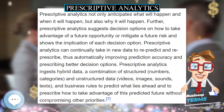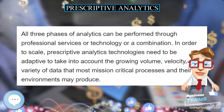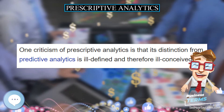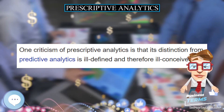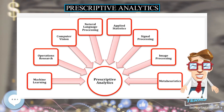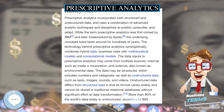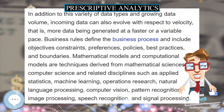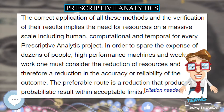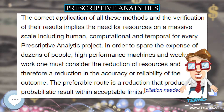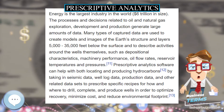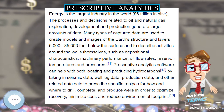Applications in Oil and Gas: Energy is the largest industry in the world at $6 trillion in size. The processes and decisions related to oil and natural gas exploration, development, and production generate large amounts of data. Many types of captured data are used to create models and images of the earth's structure and layers 5,000 to 35,000 feet below the surface and to describe activities around the wells themselves, such as depositional characteristics, machinery performance, oil flow rates, and reservoir temperatures and pressures. Prescriptive analytics software can help with both locating and producing hydrocarbons by taking in seismic data,